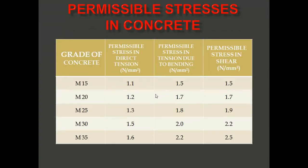The permissible stresses in concrete chart is available in IS 3370 and IS 456. For M55, the permissible stress in direct tension is 1.1 N/mm², tension due to bending is 1.5 N/mm², and permissible shear stress is 1.5 N/mm². This chart is very useful in examinations for assessing the exact values for M15, M20, M25, M30, and M35 grades. The unit is Newton per mm square.